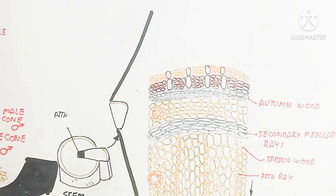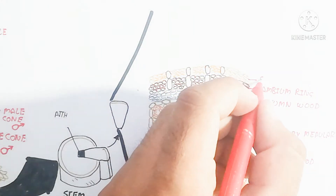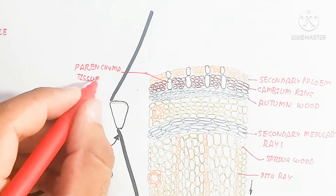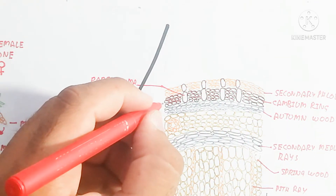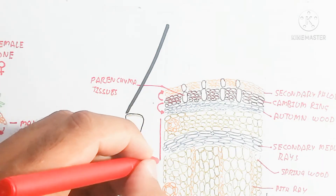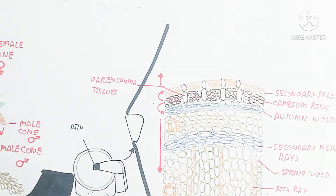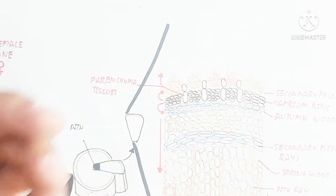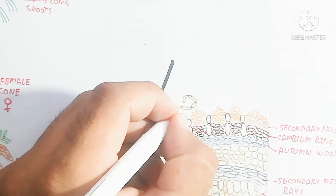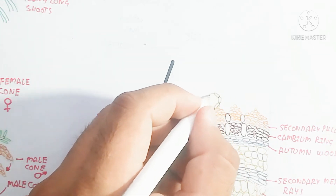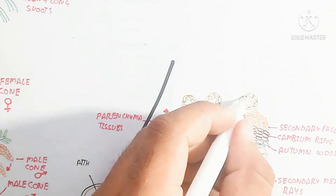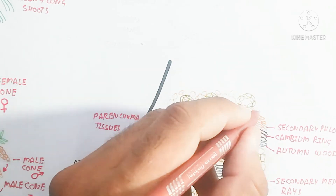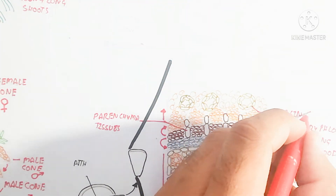The cambium ring is the living tissue, while the xylem is the dead tissue. Inside is the dead tissue. The cambium ring produces both phloem and xylem: xylem moves inward while phloem moves outward. Parenchyma tissue is present in the cambium ring. Secondary phloem is produced after primary phloem and moves outside, while primary to secondary xylem is produced moving inside.